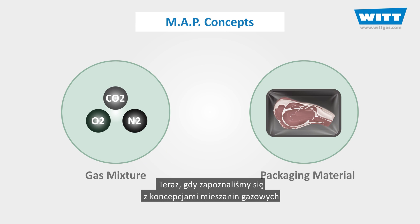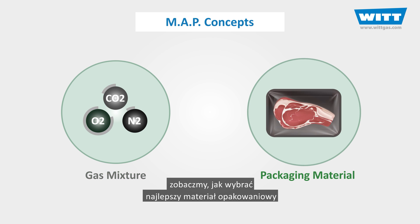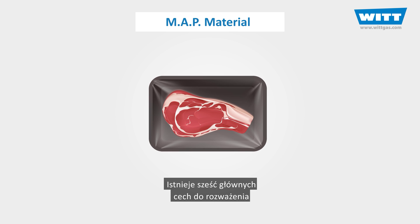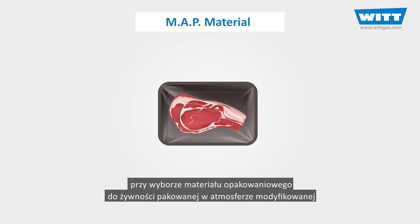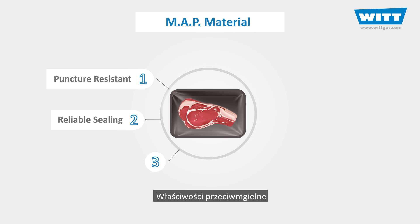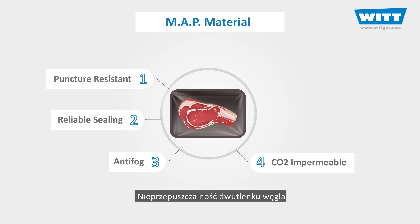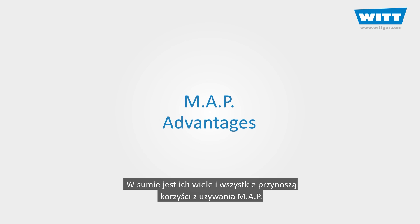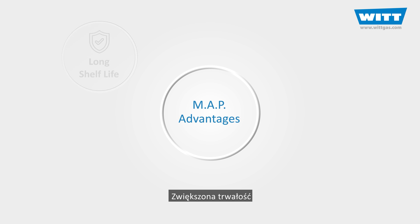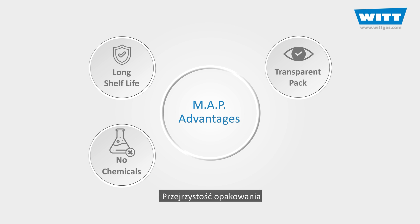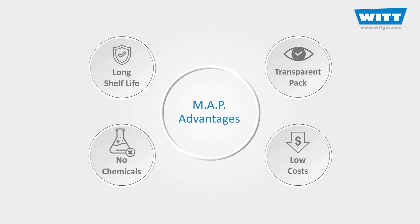Now that we've become familiar with the gas mixture concepts, let's see how we select the best packaging material, as it's essential to maintain the quality and safety of MAP foods. There are six main characteristics to consider: resistance to puncture, sealing reliability, anti-fogging properties, carbon dioxide impermeability, oxygen impermeability, and low water transmission rate. Overall, there are lots of benefits of using MAP — including increased shelf life, little or no need for chemical preservatives, improved presentation, clear view, and reduction in production and storage costs.